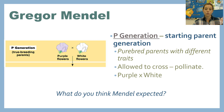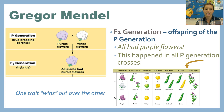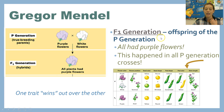Starting with the P generation — the true breeding or purebred parent generation — when he cross-pollinated the purebred purple and white, his next generation all had purple flowers. This happened no matter what characteristic he was looking at; there was always one trait that won out over the others. In seed color, when he crossed yellow and green, he got yellow in the F1 generation — the offspring of the P generation. F stands for filial, meaning son or daughter. No matter what P generation he crossed, there was always one trait that won out in the F1 generation.